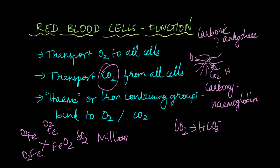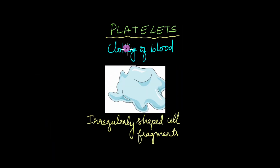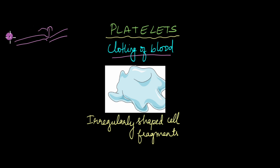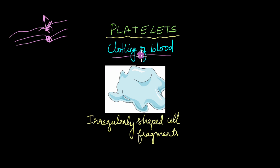Next, we will take a look at the other type of formed elements: platelets. Platelets are involved in the clotting of blood. Say there is an injury and a break in the blood vessel, causing blood to leak out — this could be internal or external. What platelets do is clump up at the site of the blood vessel injury and stop the blood from flowing out. That is what is known as clotting of blood. Platelets are majorly involved in the clotting or coagulation of blood. We will talk more about this when we discuss the blood coagulation process.